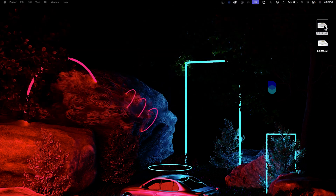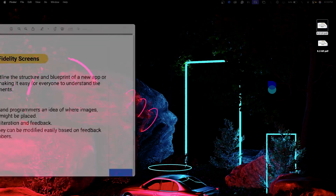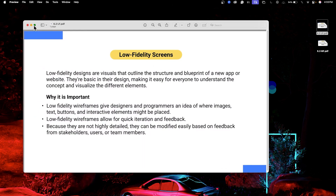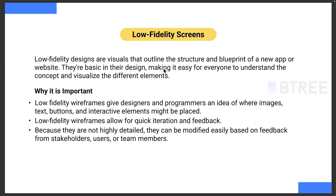First, let's start with low fidelity. As I already said, low fidelity is an outline structure — a very basic design. For example, if you have an app to build and you have four people in your team, you can see how many different elements are needed. You can use pencil and paper or a notebook. It is a very simple sketch — this is a low fidelity sketch.